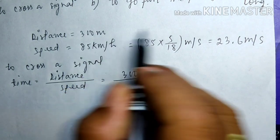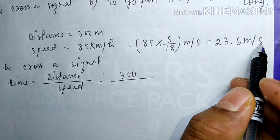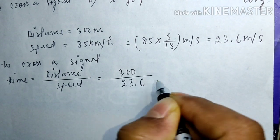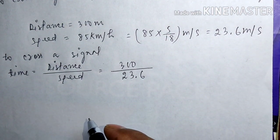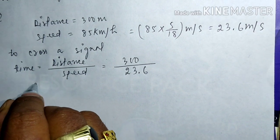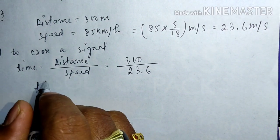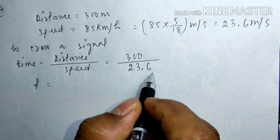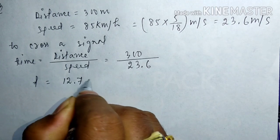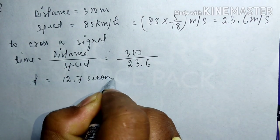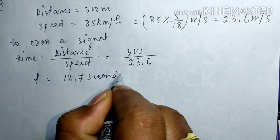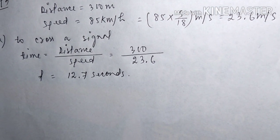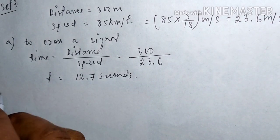Now the units are the same — distance is in meters and speed is in meters per second — so we use 23.6. Time T equals 300 divided by 23.6, which is 12.7 seconds. Here we finish solving question number six a. Let's now solve question number six b.